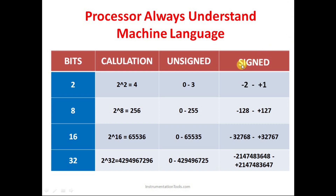Unsigned integers are values that don't have any sign — all values from zero or above zero are positive values, called unsigned integers. If you have only positive values, you can write them without any sign. For example, the value 4 has no sign, so by default it is positive.